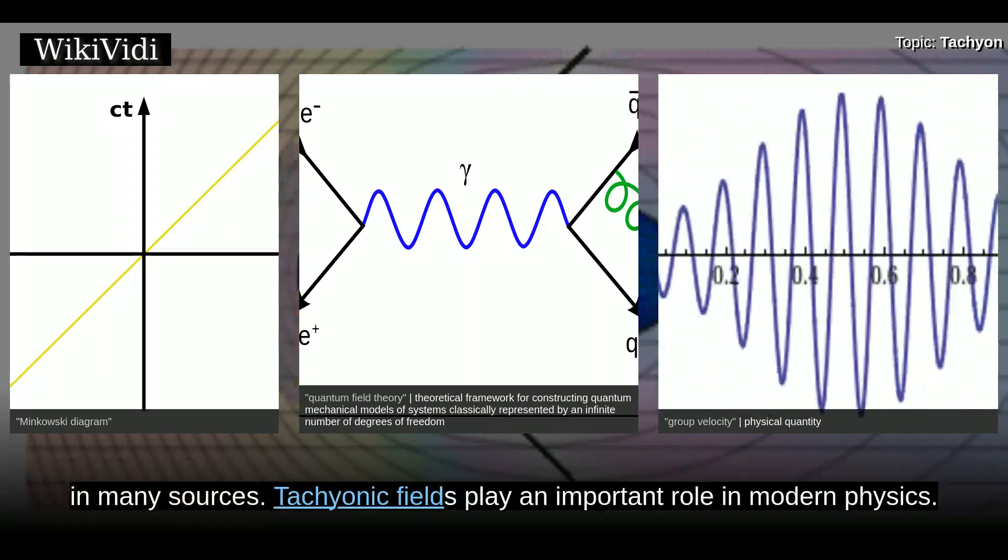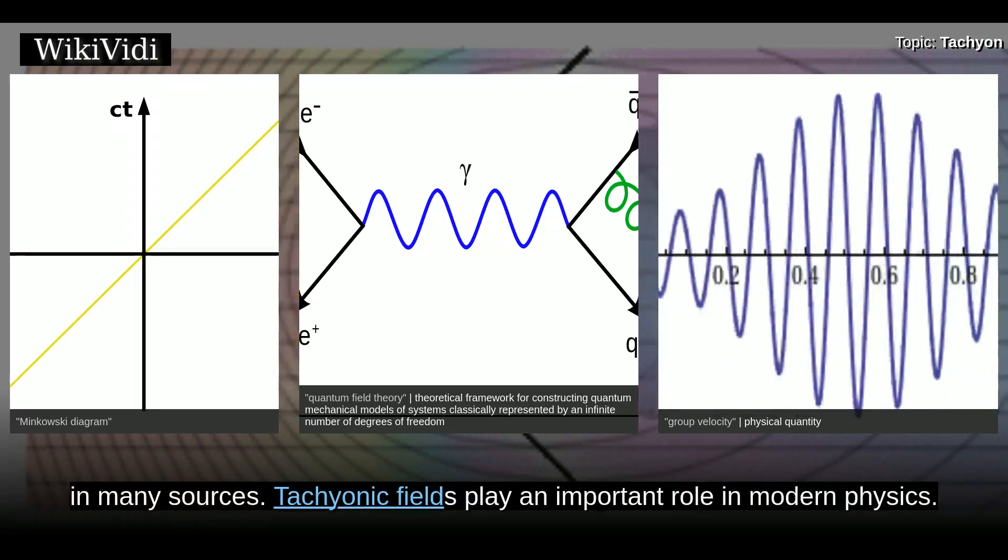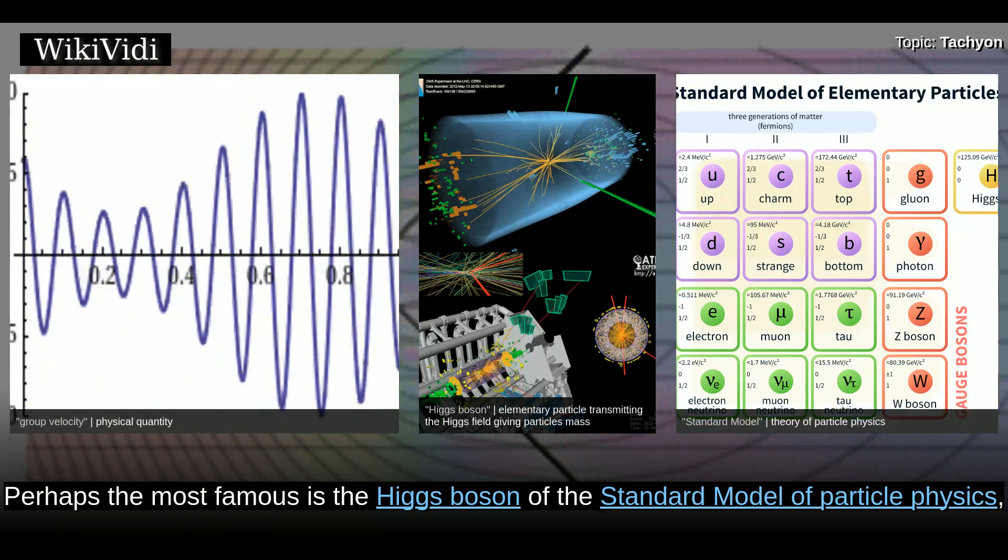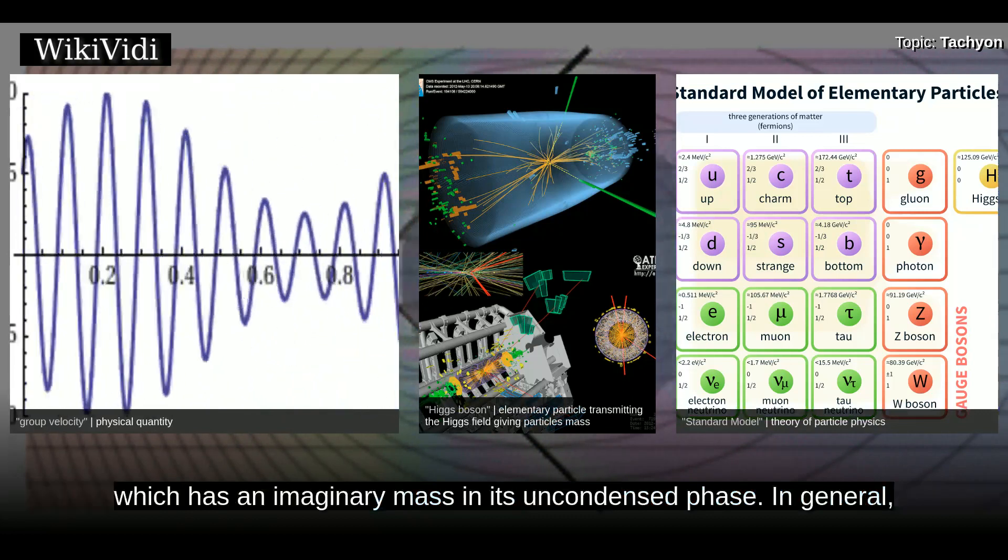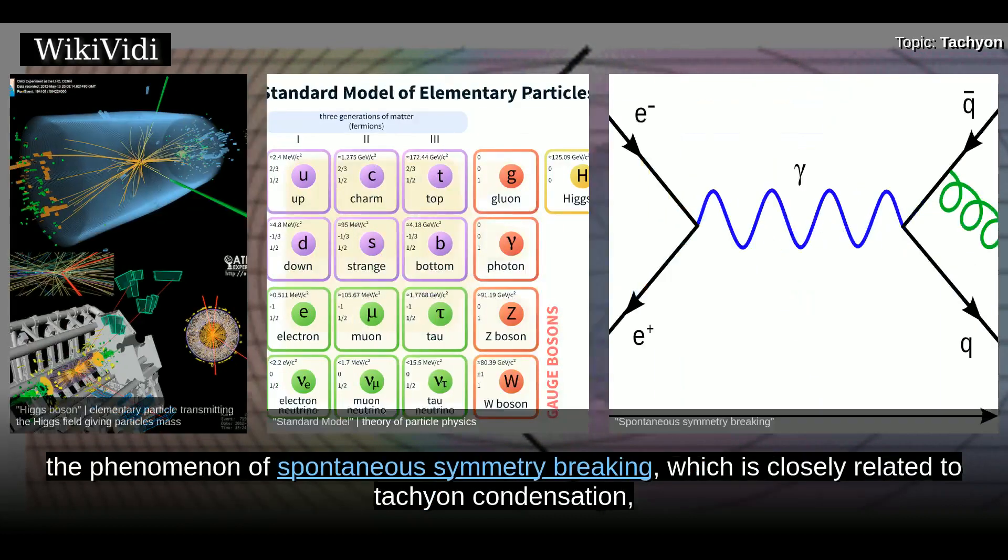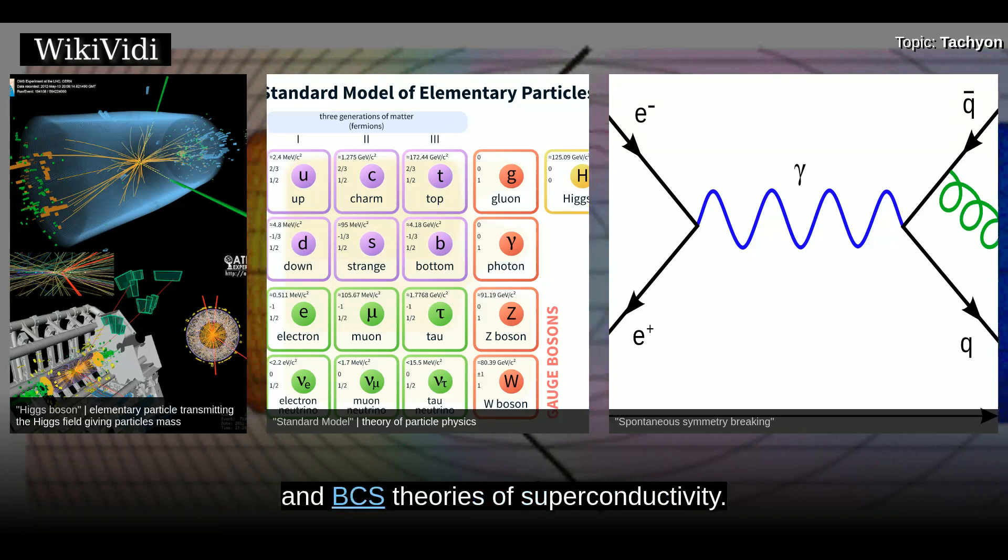In many sources, tachyonic fields play an important role in modern physics. Perhaps the most famous is the Higgs boson of the standard model of particle physics, which has an imaginary mass in its uncondensed phase. In general, the phenomenon of spontaneous symmetry breaking, which is closely related to tachyon condensation, plays an important role in many aspects of theoretical physics, including the Ginzburg-Landau and BCS theories of superconductivity.